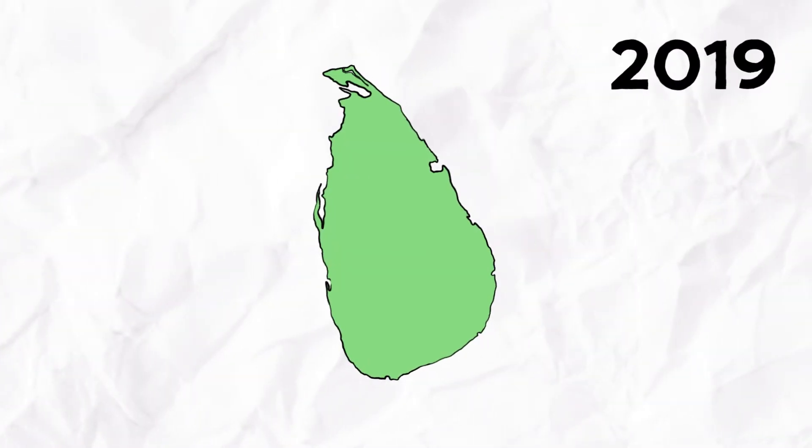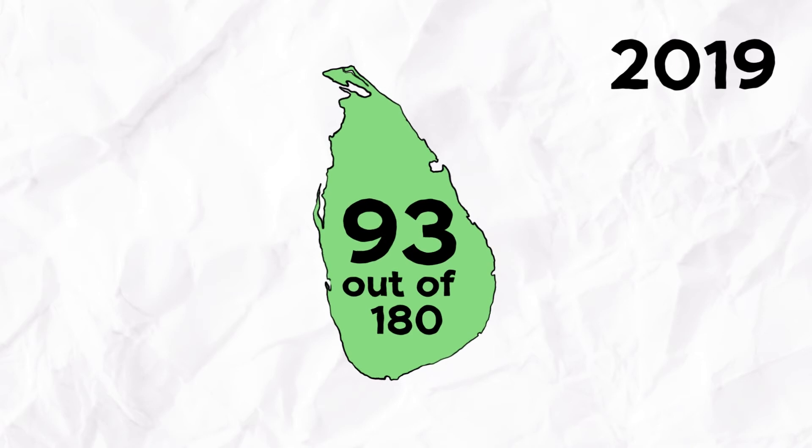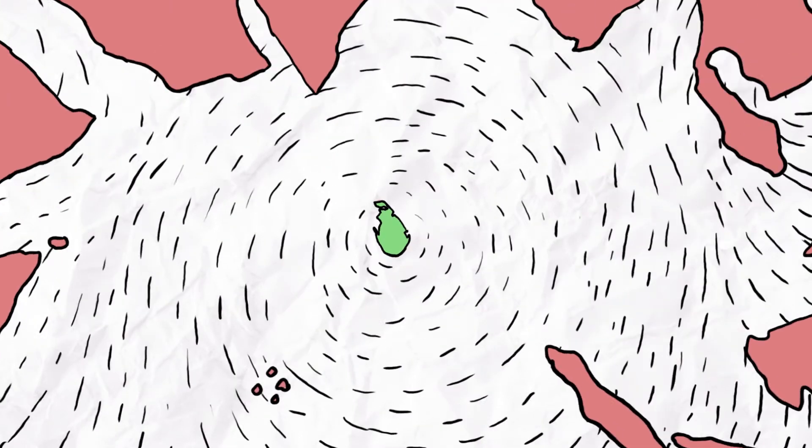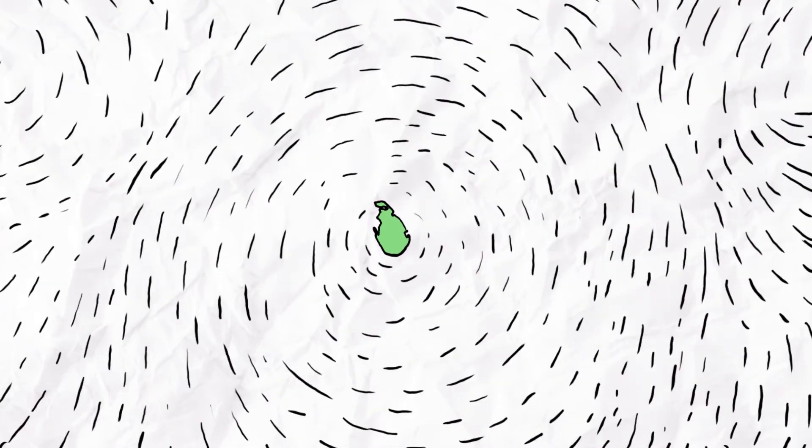In 2019, Sri Lanka was ranked 93rd out of 180 countries on the Corruption Perceptions Index. Corruption is correlated with less foreign investment and slower economic growth.